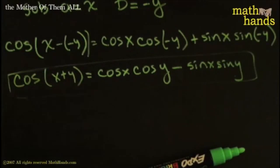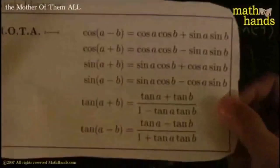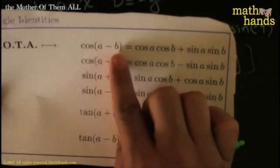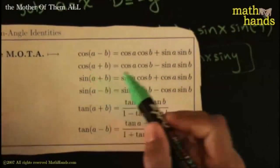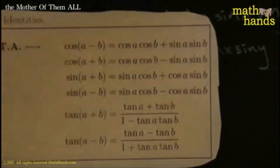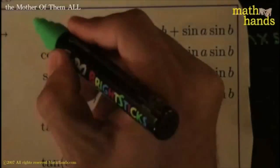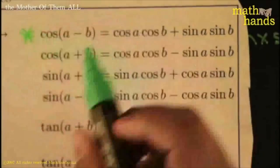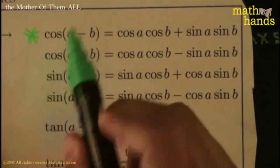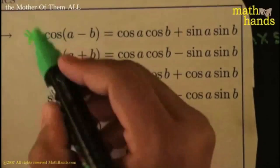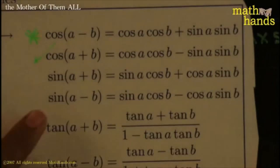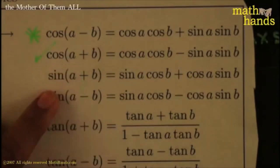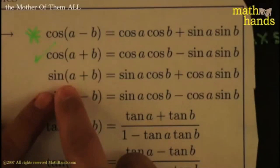That's another tomato from the mother of them all. Look at the identity sheet: cosine A minus B is the mother of them all, and from that one we just derived the one with the plus. This cosine A minus B is the one we still need to prove — that's the dessert, we'll prove it at the end. But from that one we tweaked it and got this one. Check.